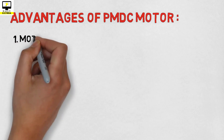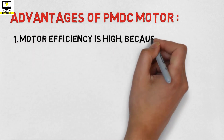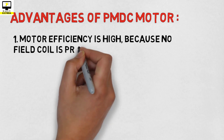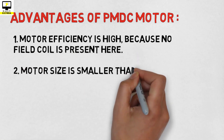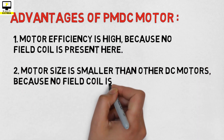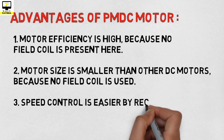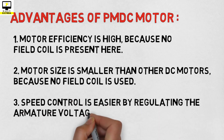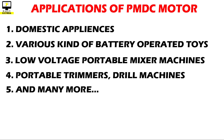Now let us discuss the advantages of a PMDC motor. Number one: PMDC motors do not use any field coil, so their efficiency is increased. Number two: as no field coil is used, the space required is very small as compared with other conventional DC motors.